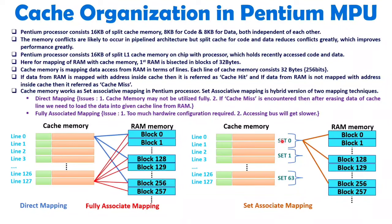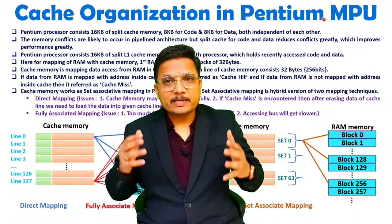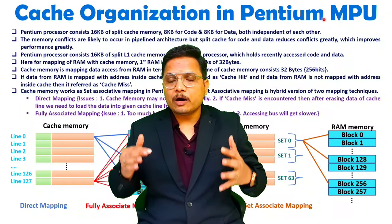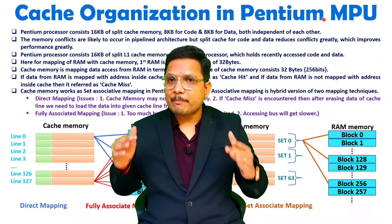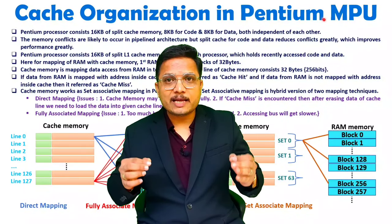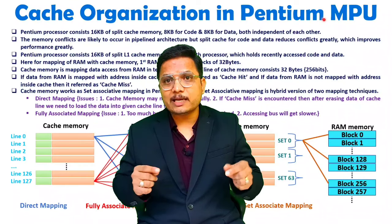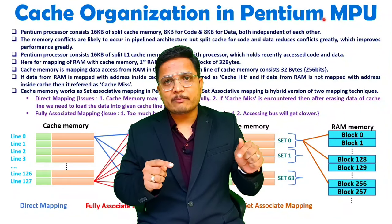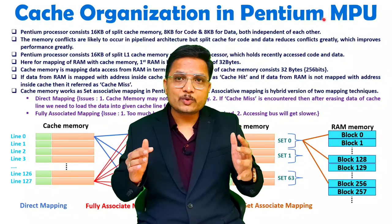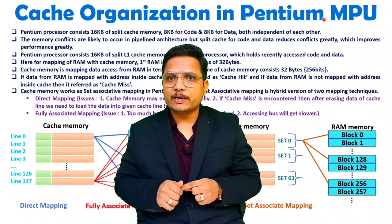Set associative mapping improves performance and reduces excessive hardware configuration. This is how RAM is mapped with cache in the Pentium architecture using set associative mapping. If any confusion remains, post it in the comment box. Thank you so much for watching this video.